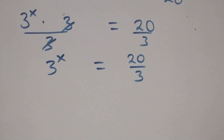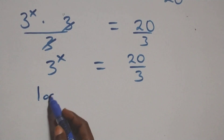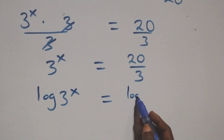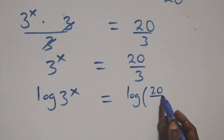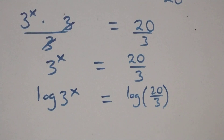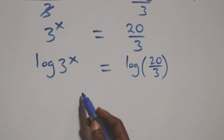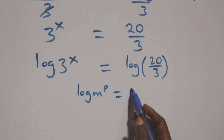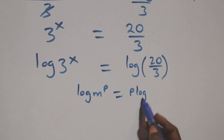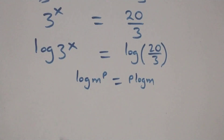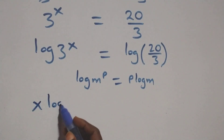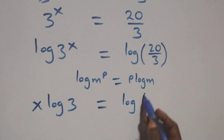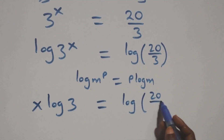The next step, we take the log on both sides. We have log of 3 raised to power x equals to log of 20 over 3. We apply the power rule of logarithms: when we have log n raised to power p, it is the same thing as p log n. This becomes x log 3 equals to log 20 over 3.